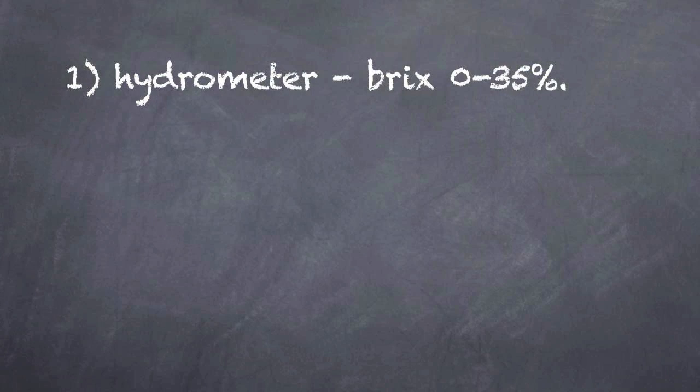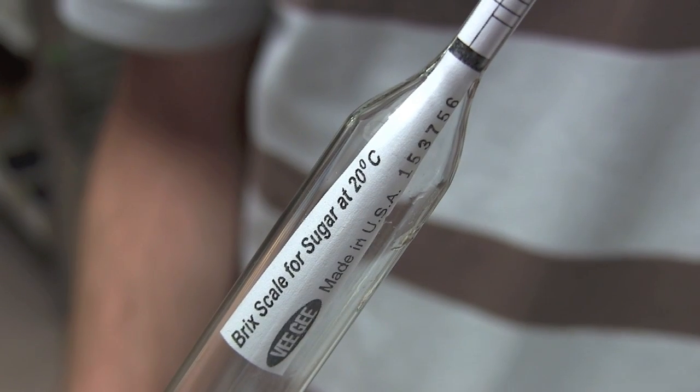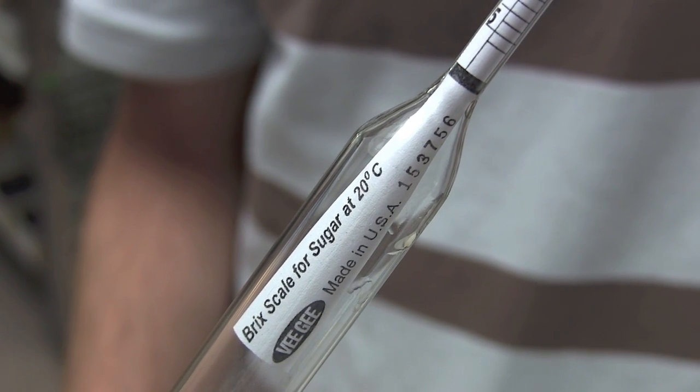For this project you'll need a couple things. First you'll need a hydrometer that measures in brix with a scale of 0 to 35%. These hydrometers are calibrated to work best with a liquid temperature of about 68 degrees Fahrenheit.